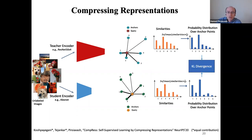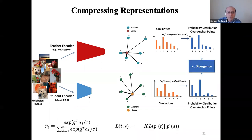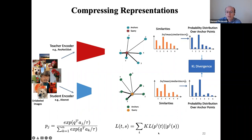The loss formulation: P is defined as e to the power of the dot product between the query and anchor embeddings, normalized over all data points. We calculate the KL divergence between the teacher's distribution P and the student's distribution P, summed over all data points. That is the main loss we minimize.